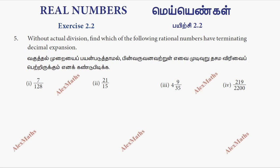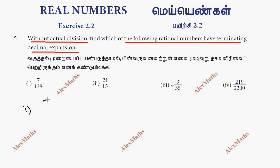Hi students, this is Alex. Exercise 2.2, question number 5: without actual division, find which of the following rational numbers have terminating decimal expansion. In the first subdivision, 7 by 128. We factorize 128.